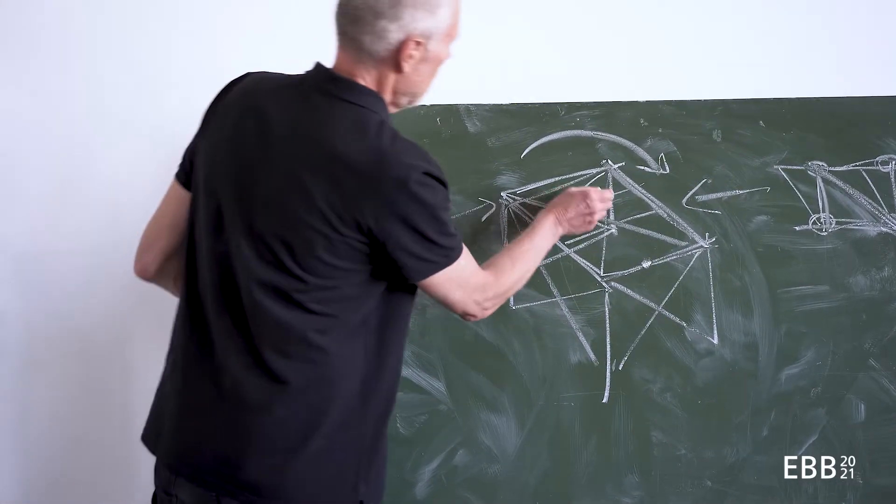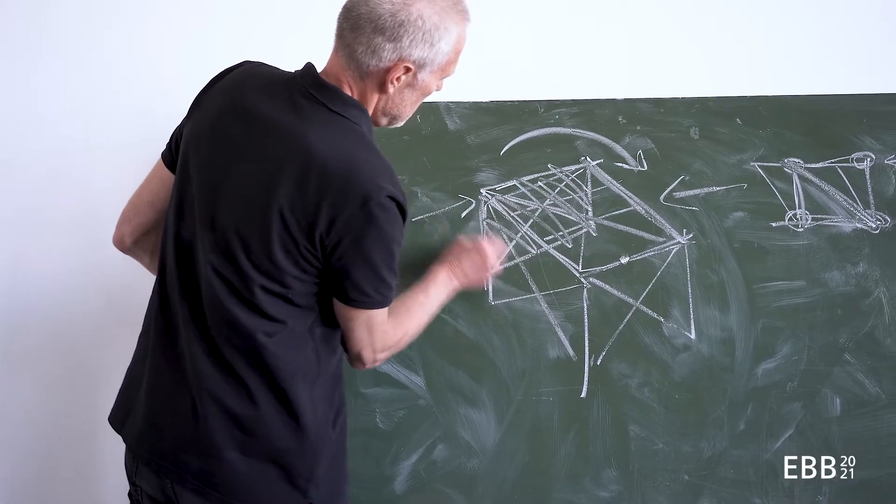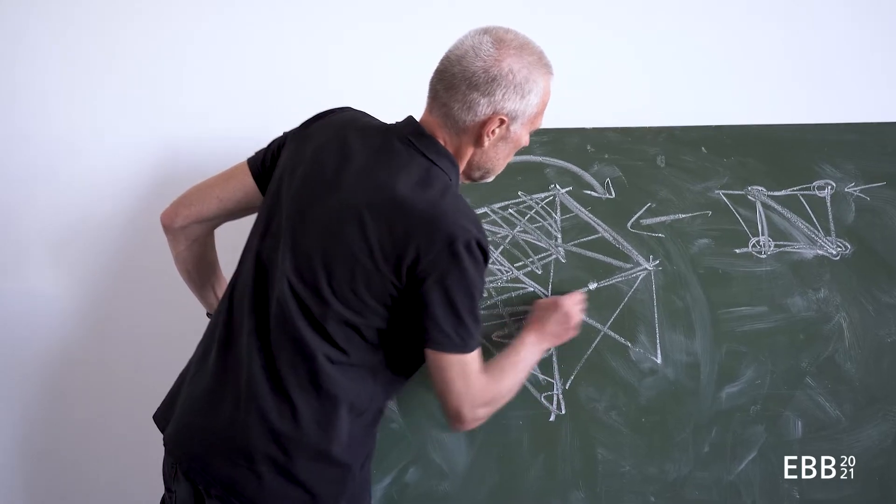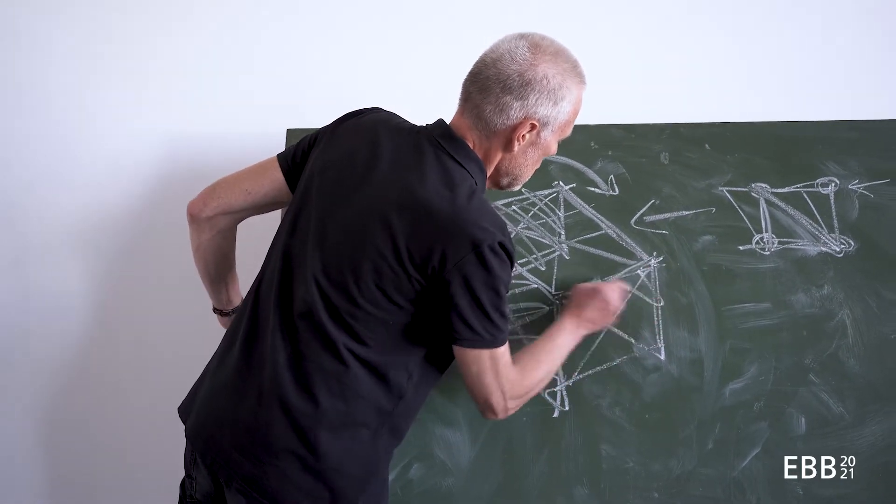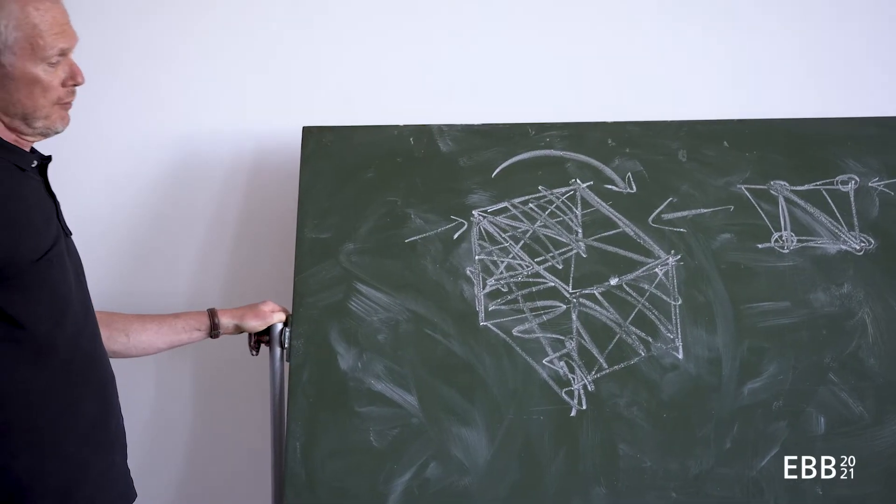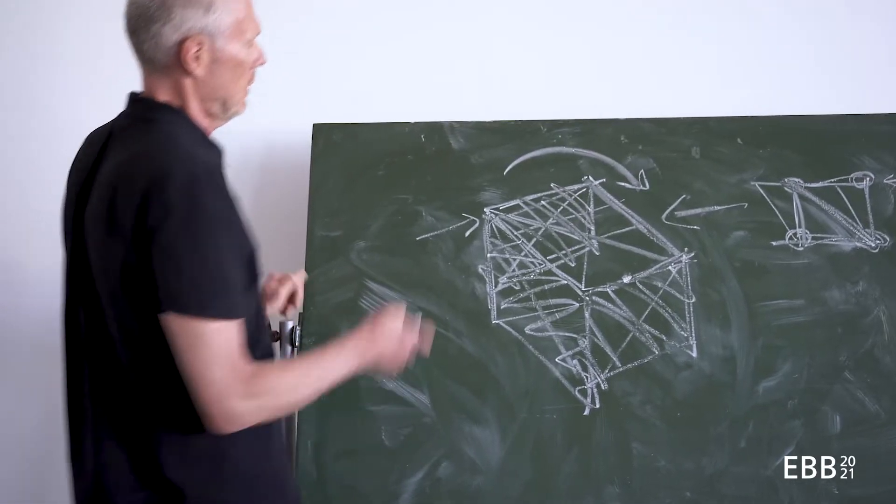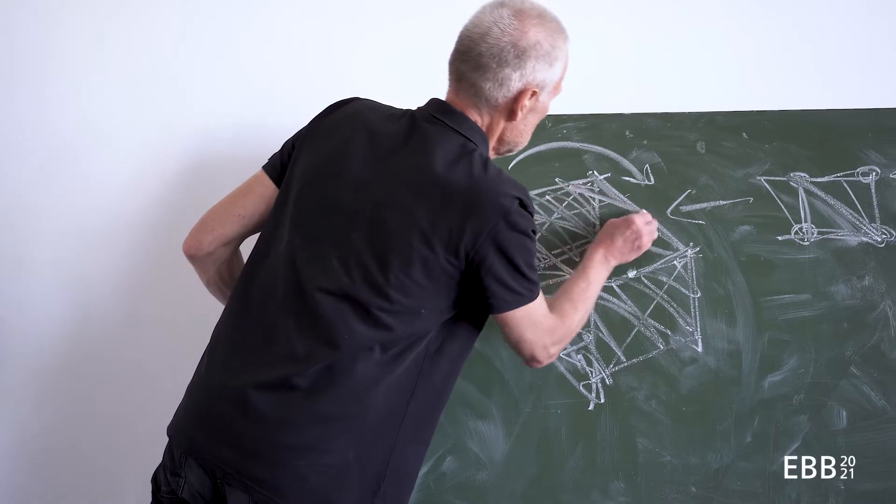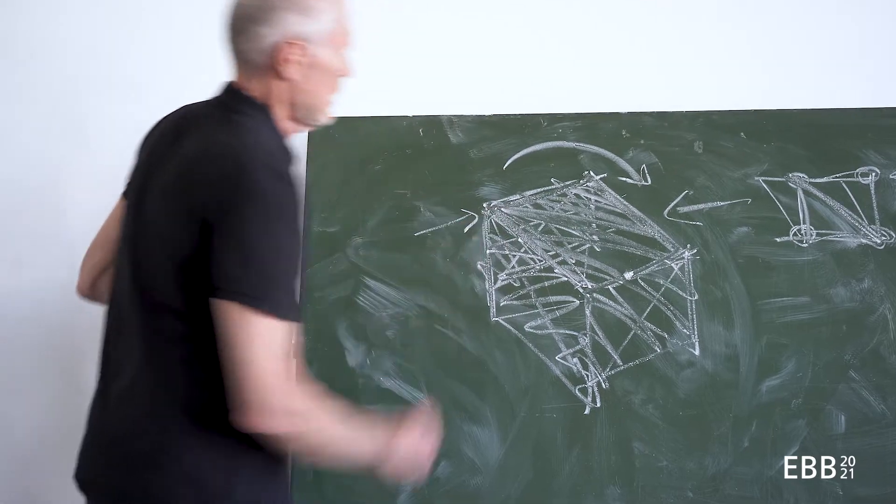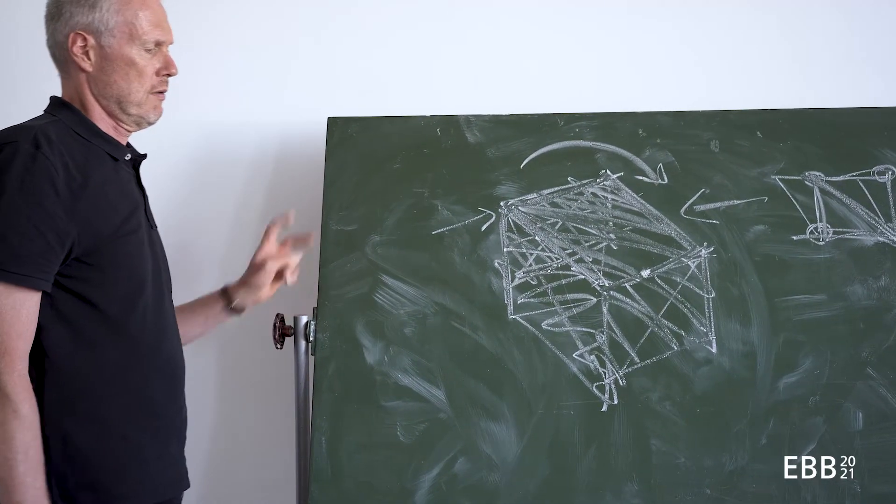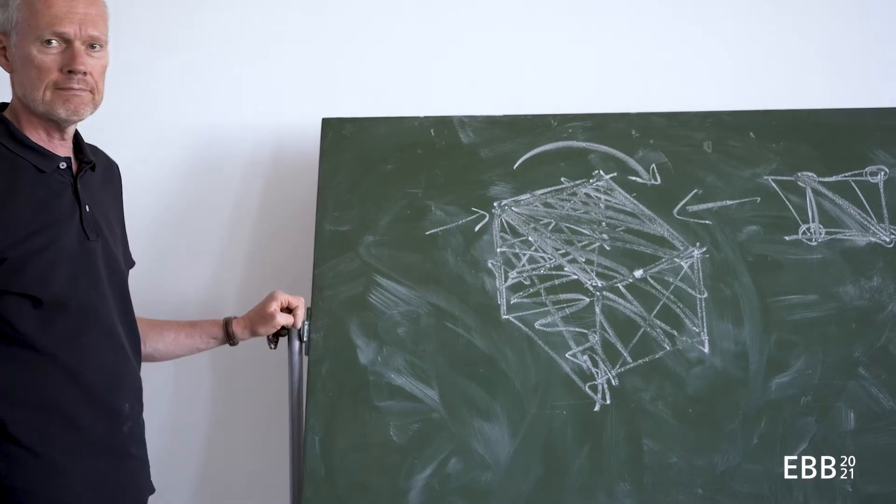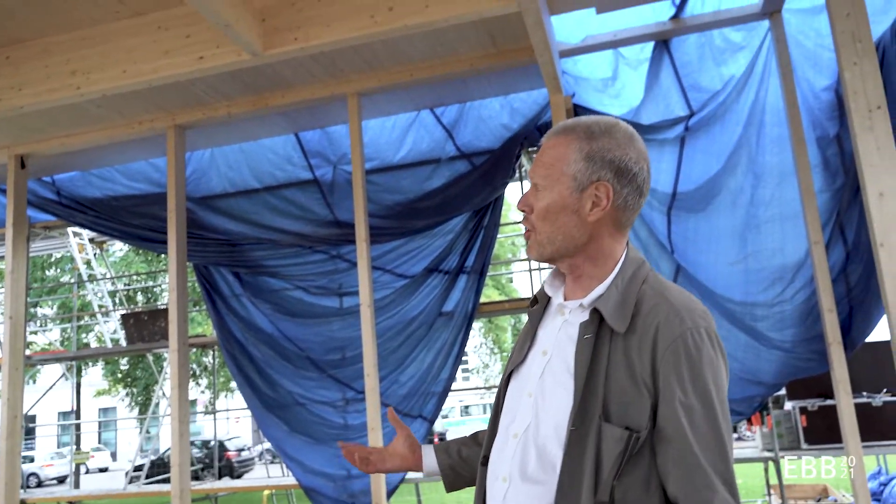This becomes kind of difficult to read. Three layers: one layer this one, second beam this one in my sketch, third beam this one here to rigidify the thing in plan, plus a horizontal surface here which is working as a stable surface as well.